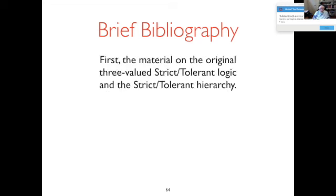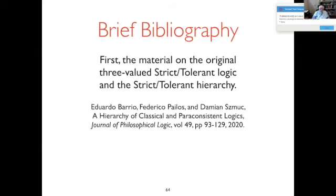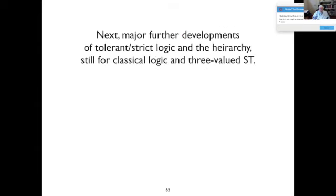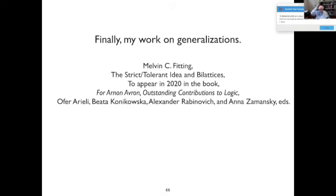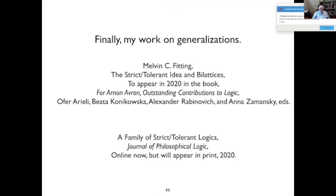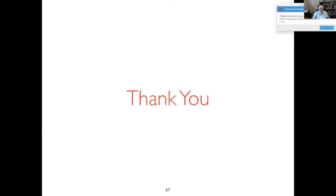For further reading: the original material on strict tolerant and tolerant strict is in the Journal of Philosophical Logic this year. The strict tolerant strict hierarchy by Chris is also in the Journal of Philosophical Logic, a little later in the year. My work appears in two places — one hasn't appeared yet, in a book honoring Arnon Avron coming out at the beginning of 2021, and one available online now in the Journal of Philosophical Logic, the most detailed of the two approaches. So, that's it. Thank you.